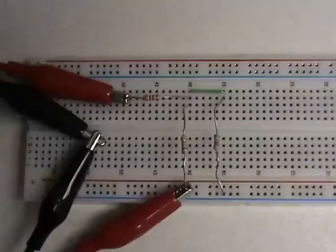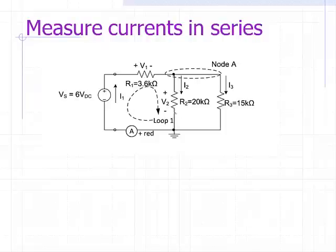To measure current, you need to place the current meter in series, so you need to break your circuit. Think about where you want to break the circuit by first looking at the schematic.